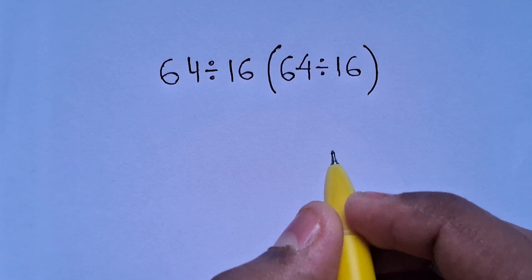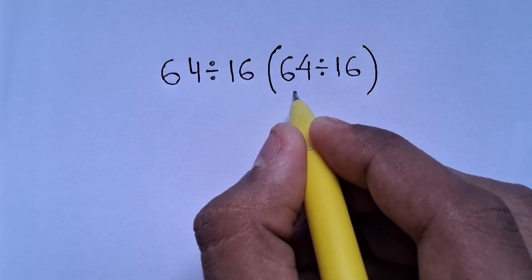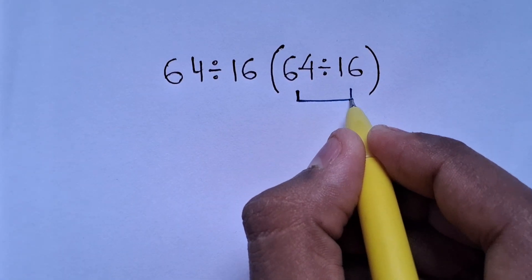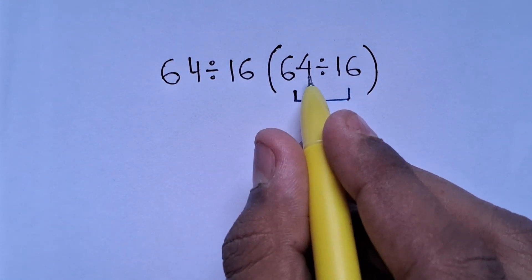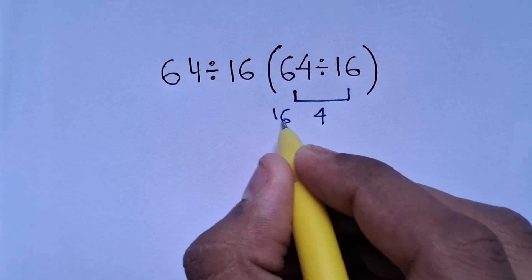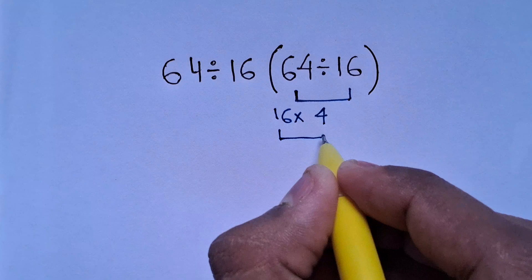So first, 64 divided by 16, which is equal to 4, which is multiplied by 16. So 16 times 4, which equals 64.